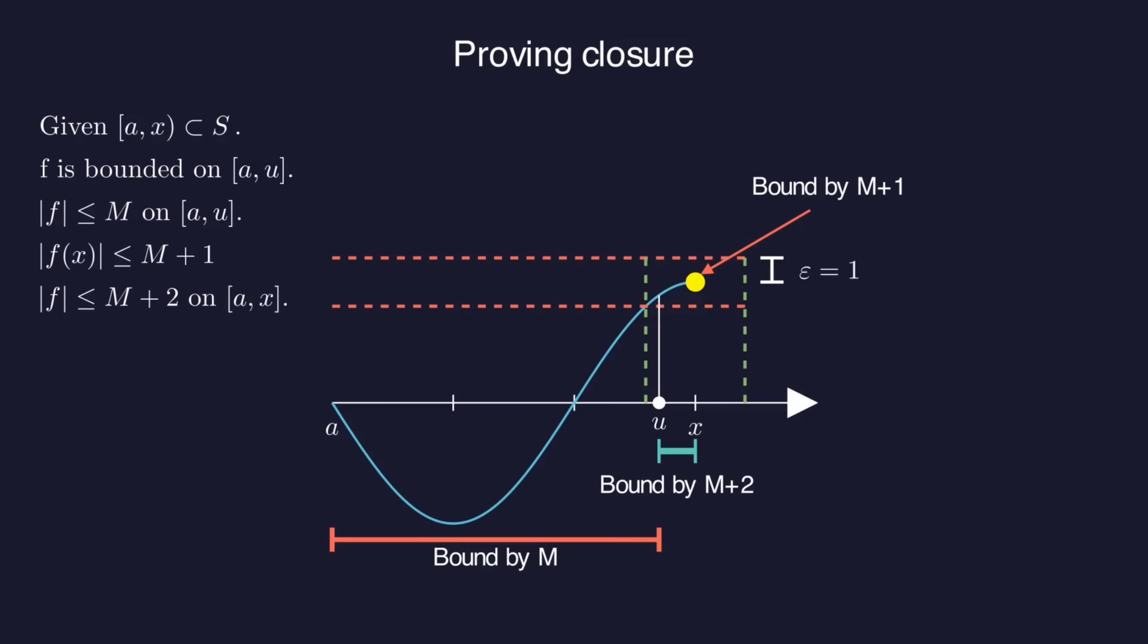Perfect. That's a bound for the function value on the closed interval from A to X. That means the closure property holds, and we're done with the proof. So we've proven that a continuous function on the closed interval from A to B must be bounded.